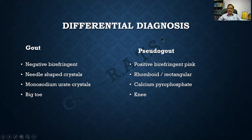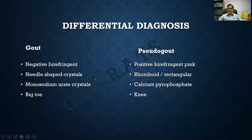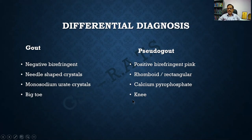A differential diagnosis worth noting is pseudo gout — you will score a mark if you write this. In gout, the birefringent crystals are needle-shaped and consist of monosodium urate, found in small joints such as the big toe. In pseudo gout, the crystals are rhomboid or rectangular and consist of calcium pyrophosphate, found mainly in the knee joint. Remember there is a condition called pseudo gout.